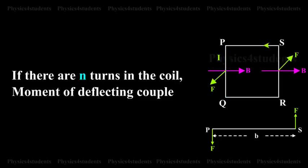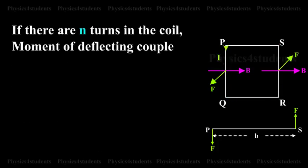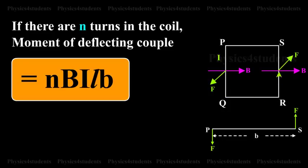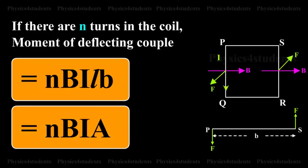If there are N turns in the coil, moment of the deflecting couple equals NBIL times B equals NBIA.